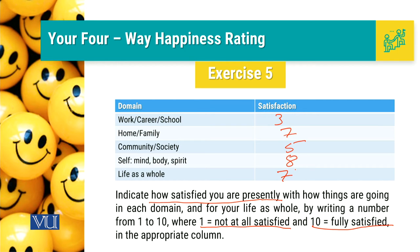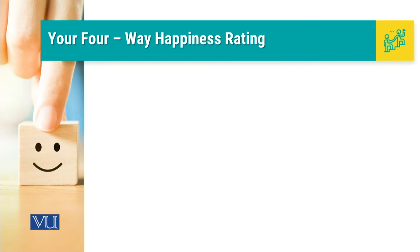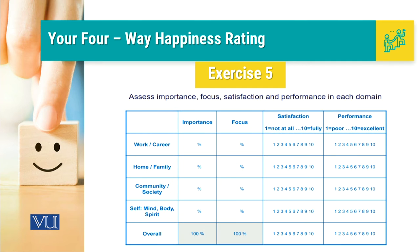Now this satisfaction grid which we have filled has certain implications, which we will go through on the next slide. In exercise five's next step, we have to think about importance and focus. This time we are going to assess four constructs: importance, focus, satisfaction, and performance — to find out what our situation is in terms of our attention and concern with all of our stakeholders. If I think about the importance of my work, maybe work is 20%, home is 40%, community importance is 20%, and I want to give my mind 20% of my importance.